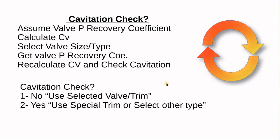How do you check for cavitation in practice? The challenge is that you cannot check if your valve cavitates without knowing its recovery coefficient, and you won't know the recovery coefficient until you select a specific valve — so it is an iterative process. Start by assuming a recovery coefficient, calculate the CV, then select a valve type. Take the actual valve's recovery coefficient, put it back into the equations, recalculate the CV, and re-check for cavitation. If there is no problem, the selection is good. If not, check a different valve type or a different trim, and repeat.